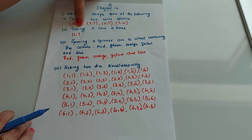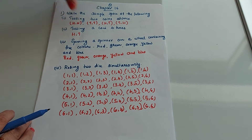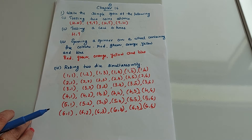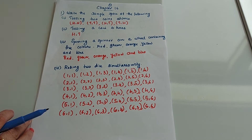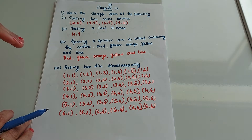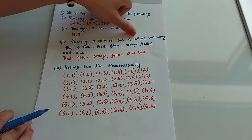Tossing a coin four times — you know that the outcomes when you toss a coin are head and tail. Whether you toss two times, three times, or four times, the outcomes are still only head and tail. So our sample space is head and tail.